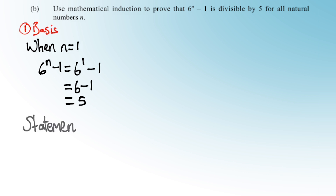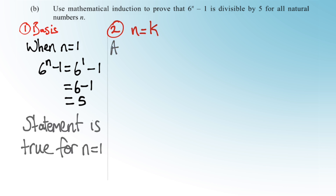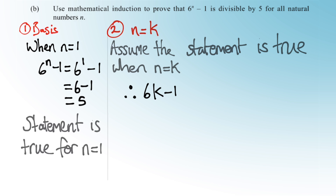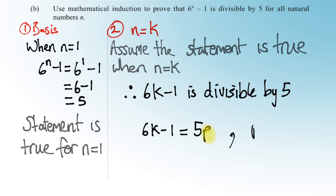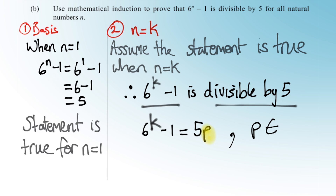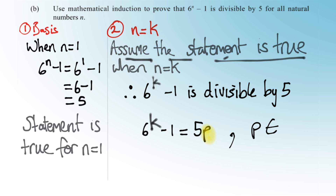Now we need to set up the premise where n = k, assuming that the statement is true. So we write: 6^k − 1 is divisible by 5. We are assuming that to be true, meaning 6^k − 1 = 5p, where we are literally substituting k anywhere we see n.